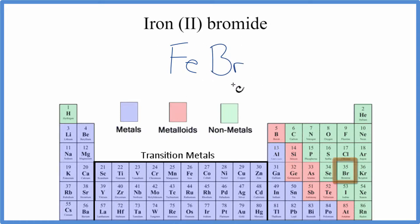Iron's a metal, and bromine's a non-metal, so it's ionic. With ionic compounds, we need to think about the charge on each element when we write the formula.